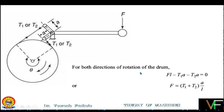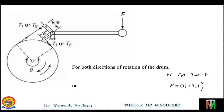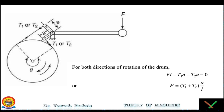For a two-way band brake with equal lever arms, the applied force is (T1 + T2) × a / l for both directions of rotation. This is all about the differential band brake. I hope you have understood the various configurations, the equation of applied force P, the conditions of self-locking, and the criteria for effectiveness. In the next lecture we will solve numerical problems based on differential band brake. In case of any doubts, feel free to contact me. Thank you.